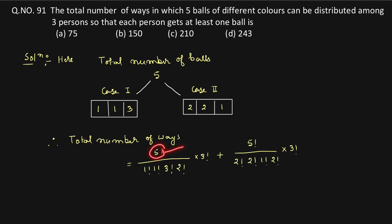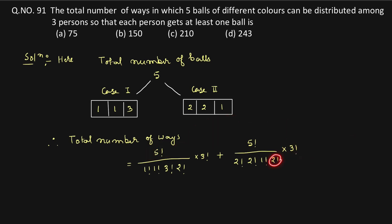We know that 5! = 5 × 4 × 3 × 2 × 1 = 120, and 3! = 3 × 2 × 1 = 6, and 2! = 2 × 1 = 2. So the expression becomes: 120 divided by (2 × 6) plus 120 divided by (6 × 2 × 2 × 2).